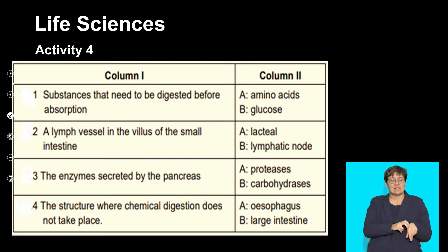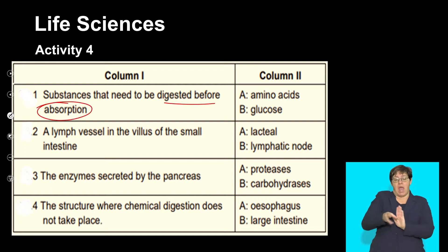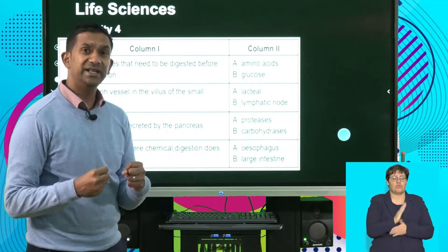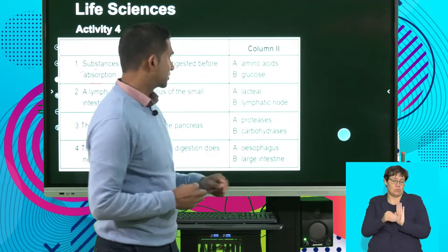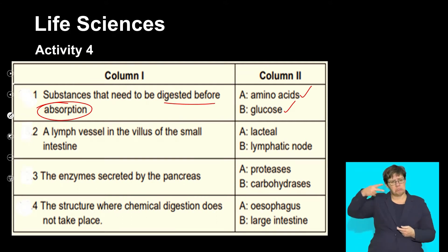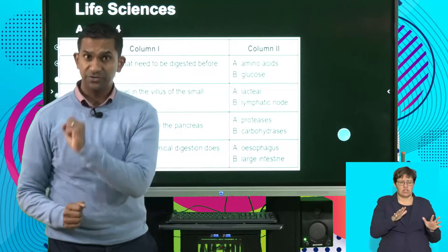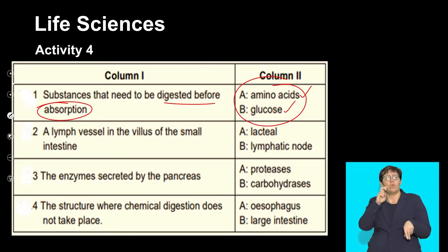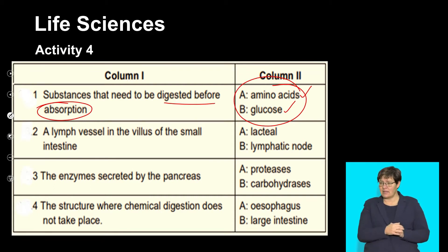3.1: Substances that need to be digested before absorption. Amino acids are the simplest molecules — they've already been digested and are easily absorbed. Glucose is already in its simplest form. Amino acids are the product of protein digestion; glucose is a product of carbohydrate digestion. Both of these do not need to be broken down any further and can be absorbed easily after digestion. So the answer here will be none.